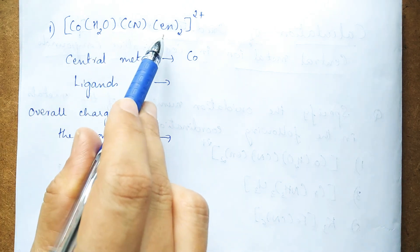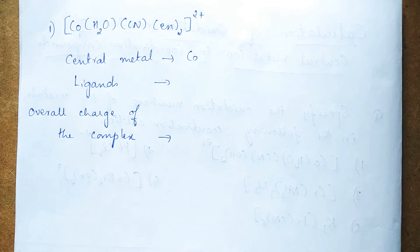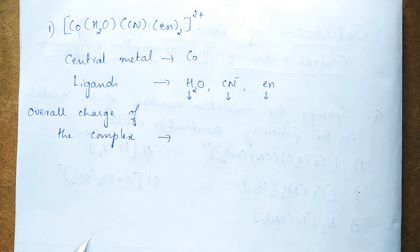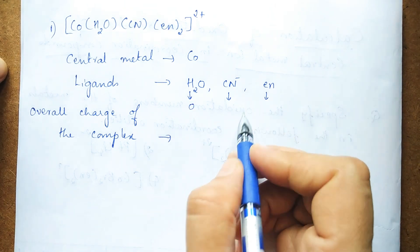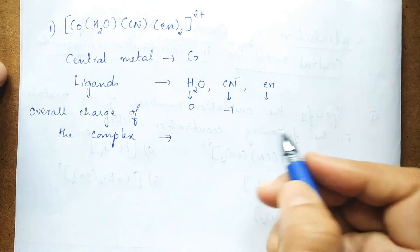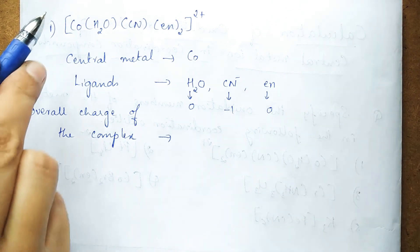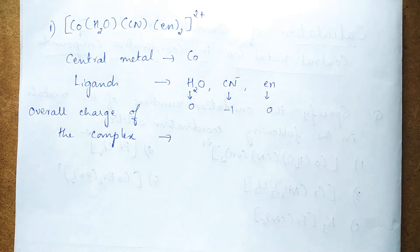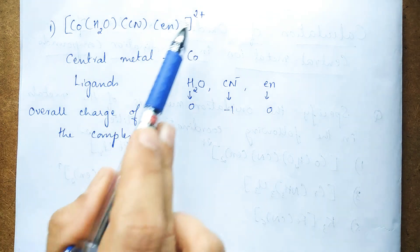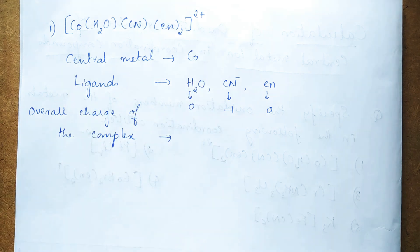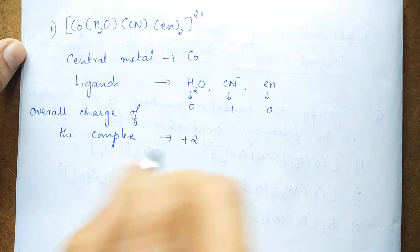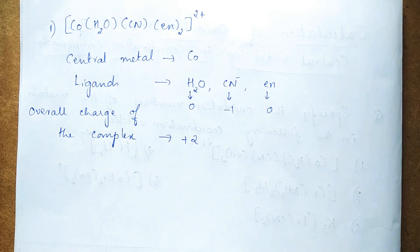There are three types of ligands: aqua (water), cyanide, and en (ethylene diamine). The charge on water is zero (neutral ligand), cyanide has a charge of minus one, and ethylene diamine is a neutral ligand with zero charge. The overall charge on the complex is plus two.